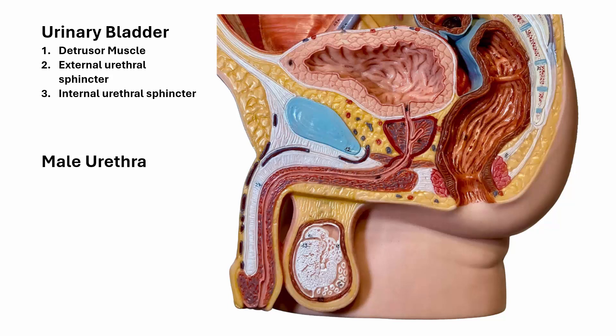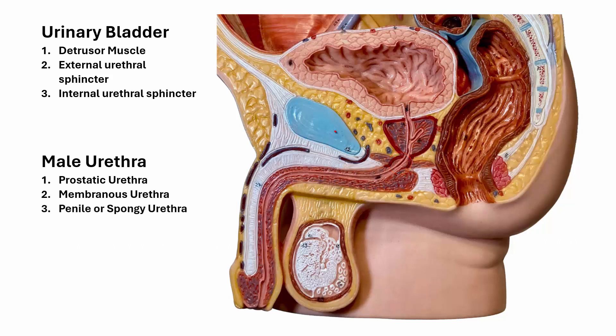The male urethra is different from the female urethra in that it is longer and has three parts. The first is the prostatic urethra, which cuts through the prostate gland. This is why if a person has enlargement of the prostate, it is very difficult to urinate — the enlarged gland compresses this part of the urethra. Next, in this area, we have the membranous urethra. Finally, the penile or spongy urethra is the remainder.